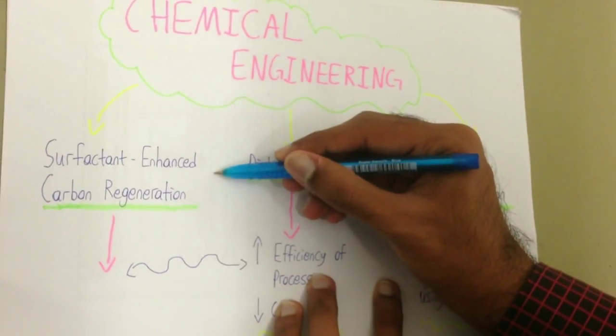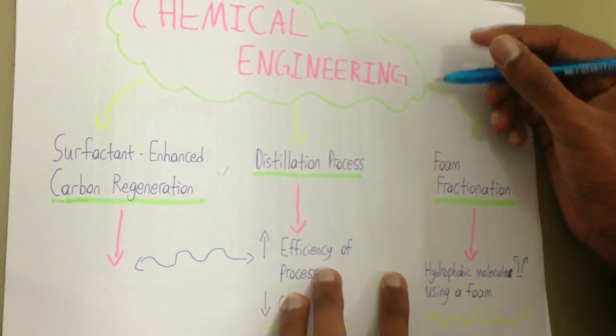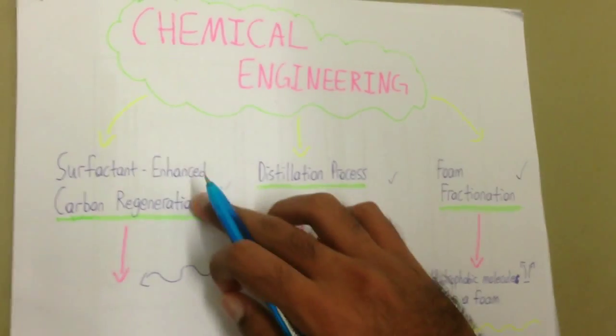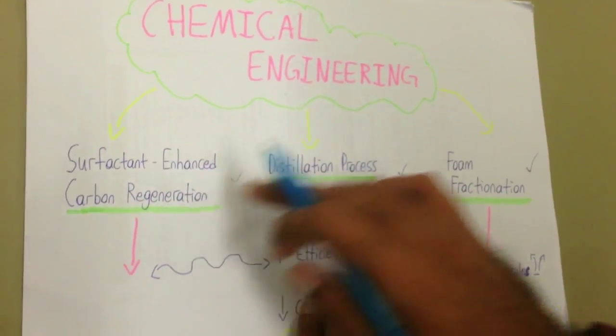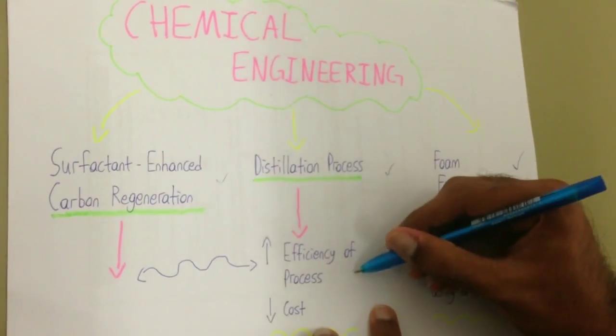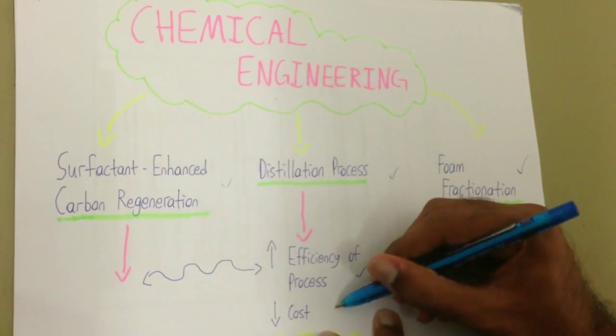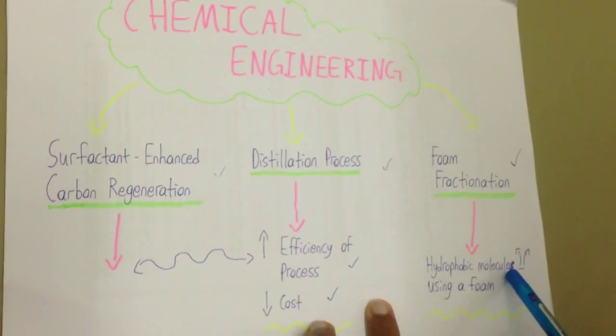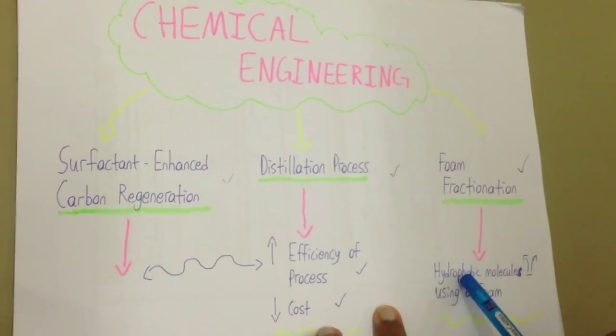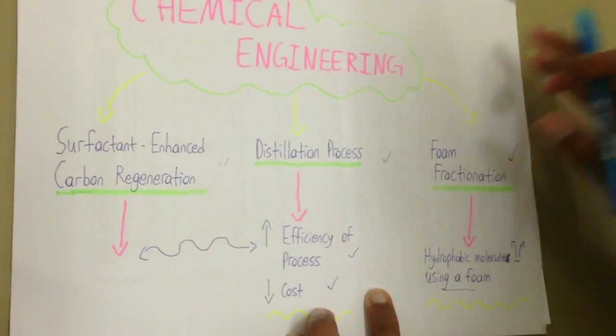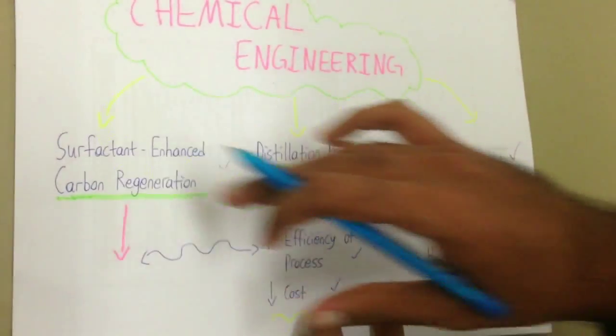There are three ways surfactant can be beneficial in chemical engineering such as surfactant-enhanced carbon regeneration, distillation process and foam fractionation. Both surfactant-enhanced carbon regeneration and distillation process share the same benefits such as increase in efficiency and reduce in overall cost. In foam fractionation, the hydrophobic molecules is separated from a liquid tube using a foam. Surfactants is used to speed up the process of all these three.